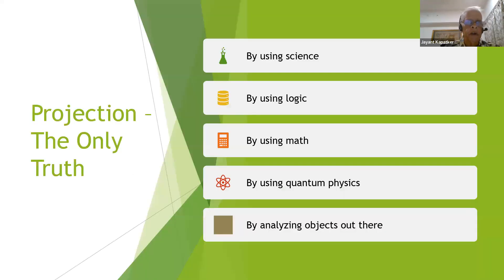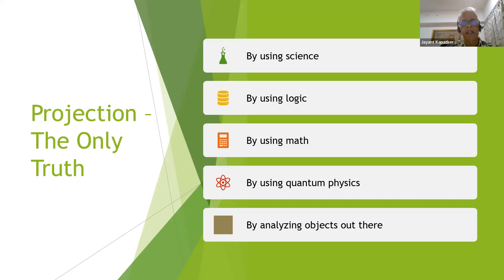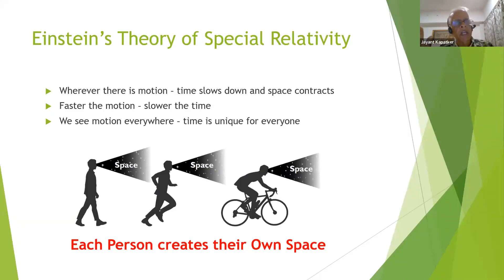So the photon doesn't travel, and projection is the only truth. We are going to show in different ways why projection of this universe is the only truth — using science, logic, mathematics, and quantum physics. Let's start by analyzing why projection is the only truth by science. The Einstein theory of relativity clearly shows that each one is creating their own space. It is within the science. It is a question of how you understand and interpret the theory of relativity — it will clearly show that projection is the only truth.